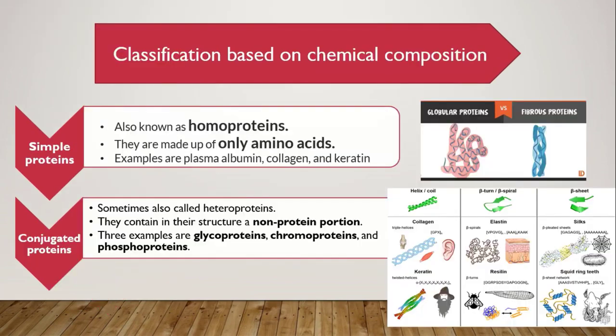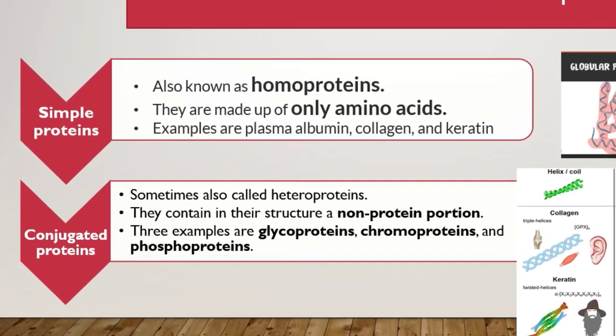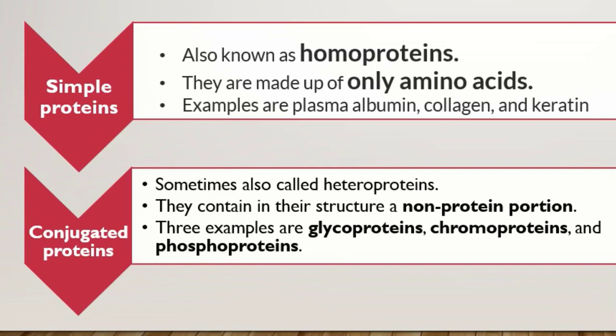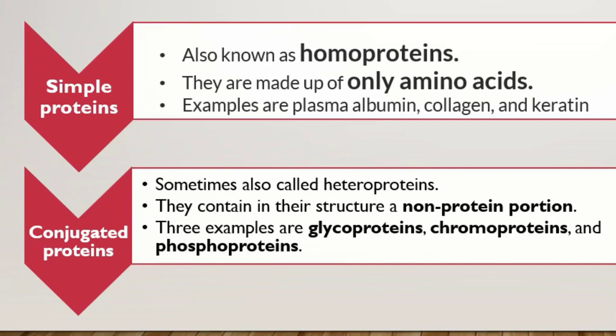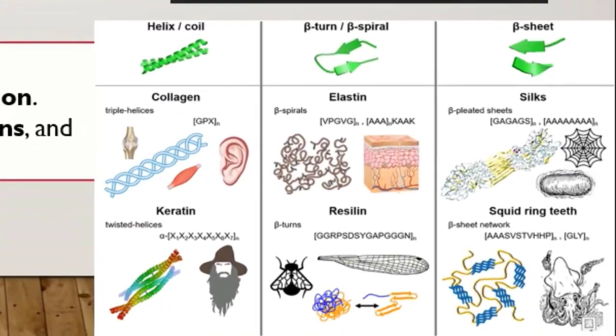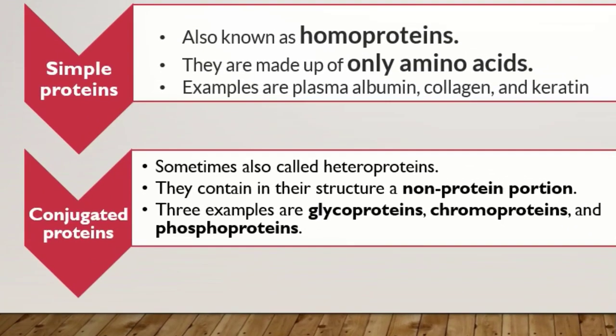آگے ہمارے پاس ہے classification based on chemical composition. There are two types: simple proteins and conjugated proteins. Simple proteins کو homo proteins بھی کہا جاتا ہے، کیونکہ یہ proteins صرف amino acids سے مل کر بنتی ہیں. ان کی examples میں plasma albumin، collagen اور keratin آتے ہیں. Conjugated proteins کو heteroproteins بھی کہا جاتا ہے کیونکہ ان کے اندر non-protein portion ہوتا ہے. ان کی examples میں glycoproteins، chromoproteins اور phosphoproteins آتی ہیں.